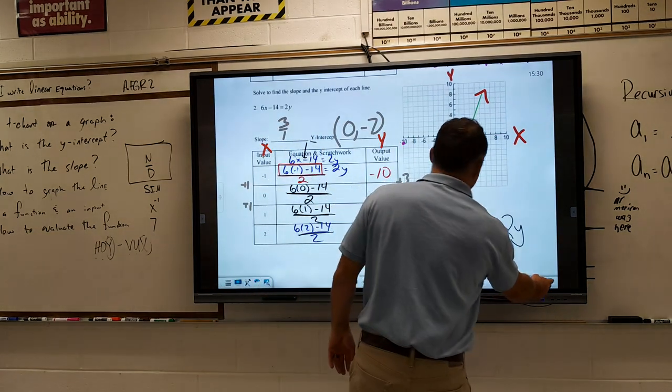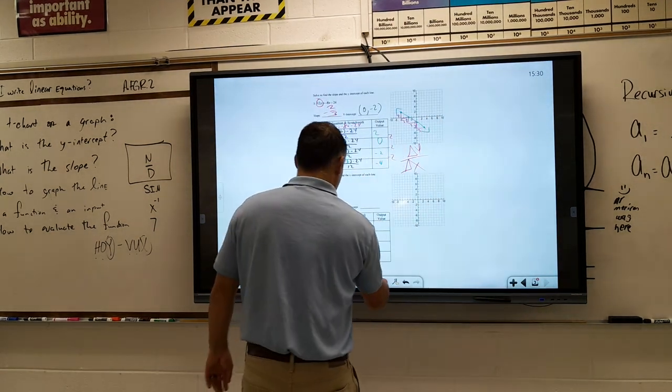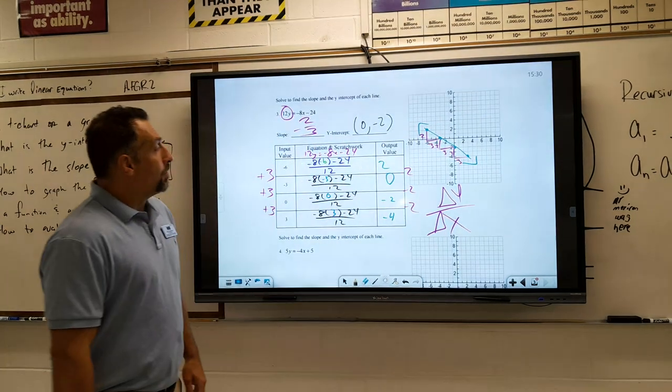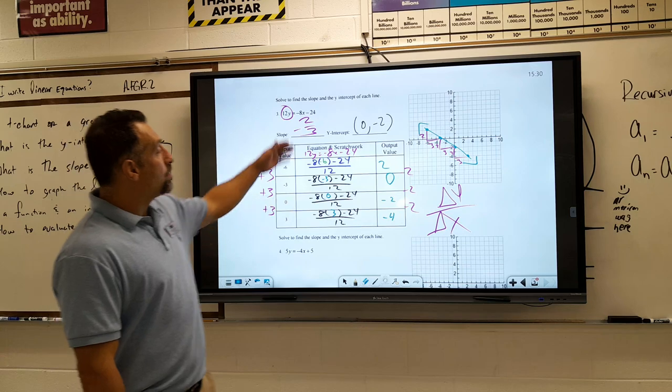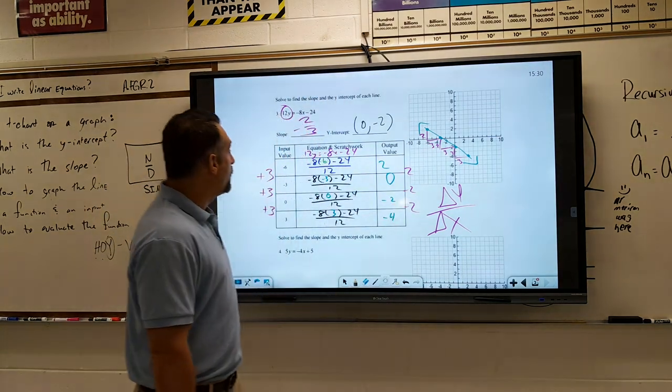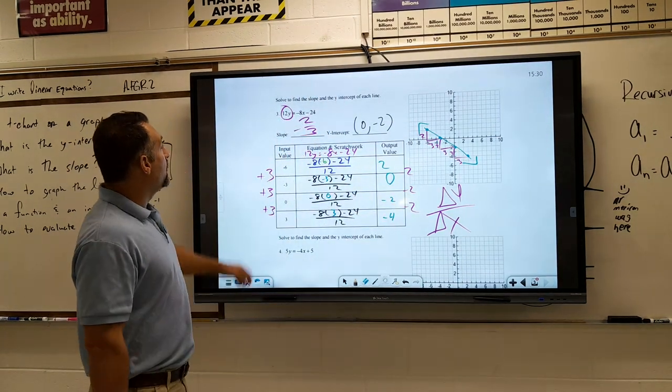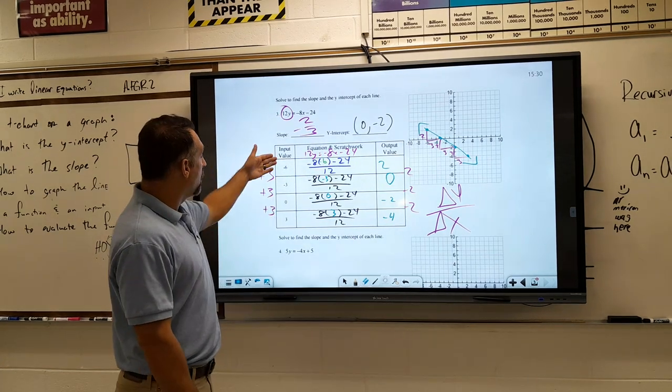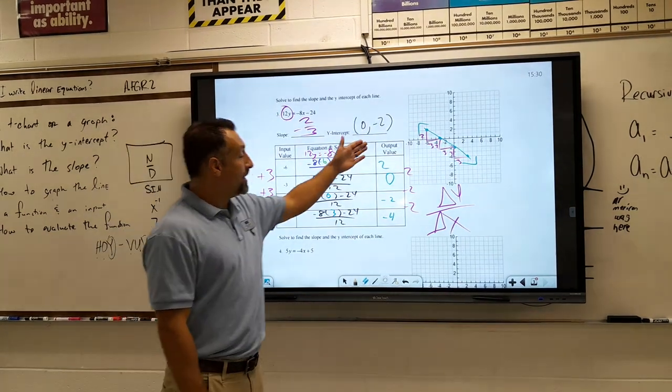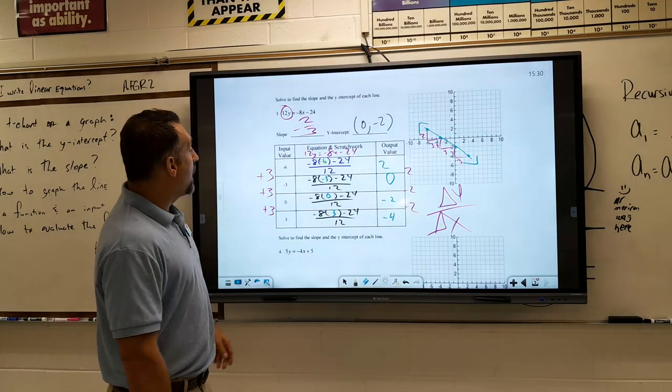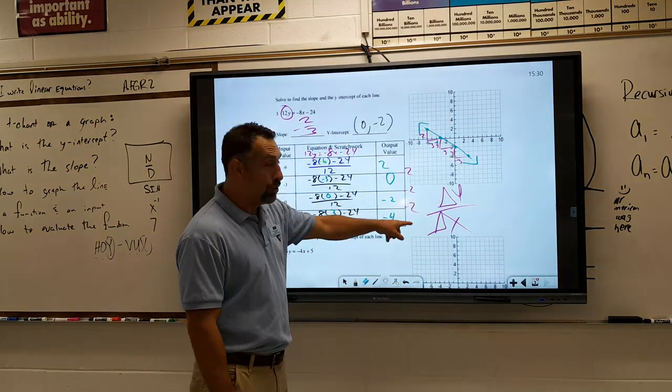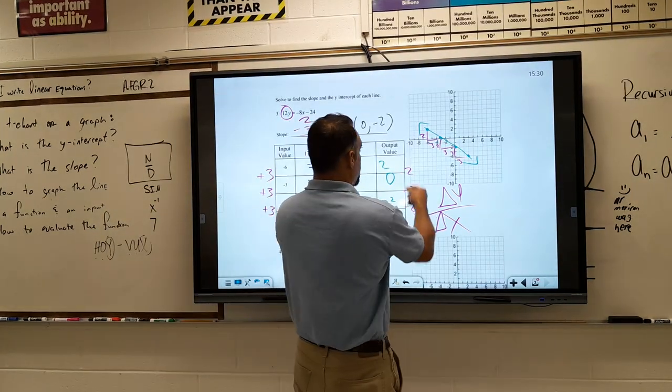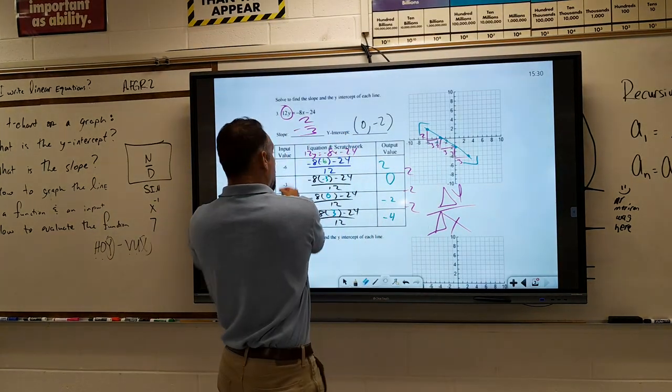We did the same kind of thing for this last example. I had kids plot the points. The slope on this one is trending downwards, so you get a negative slope. They had to divide by 12, so we built this fraction. They did that scratch work, plugged in these x values, and got these y values. The change in the y was down 2; the change in the x's is plus 3.